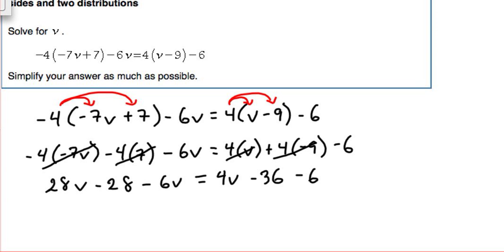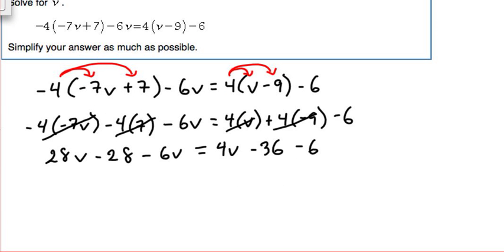What we're going to do next is combine like terms on each side, so any terms that are the same type we will combine them. 28v and the negative 6v, those two actually go together. Positive 28 minus 6 is a positive 22v, and bring down the minus 28. The 4v, that's the only term with the variable here on the right side. However, negative 36 and negative 6 is negative 42.